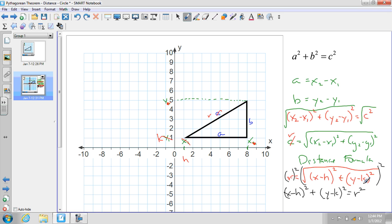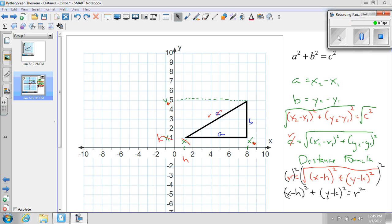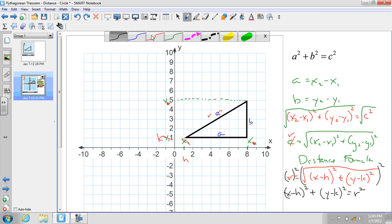And that is the standard form of the equation of a circle. So we've managed mathematically to relate the Pythagorean theorem to both the distance formula, which we already knew, as well as the standard form of the equation of a circle.